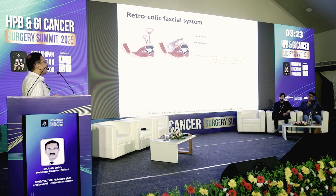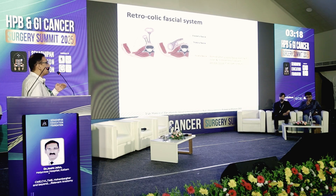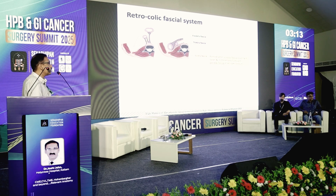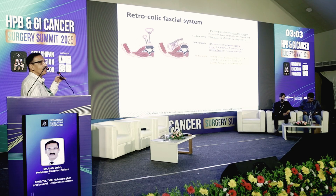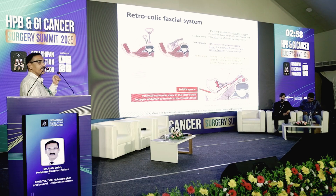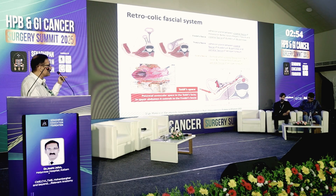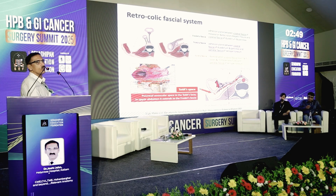Regarding the retroperitoneal fascial system: the Toldt's fascia is a fusion fascia formed by the visceral fascia covering the right colon and its mesentery when it fuses with the parietal fascia of the retroperitoneum. Higher up, where you have the pancreas and the duodenum, this fusion plane forms the Fredet's fascia and the Treitz fascia behind the pancreas and duodenum. Just like Heald's holy plane, the Toldt's fascia represents a relatively avascular space, and when it comes to the upper abdomen it extends onto the Fredet's fascia.